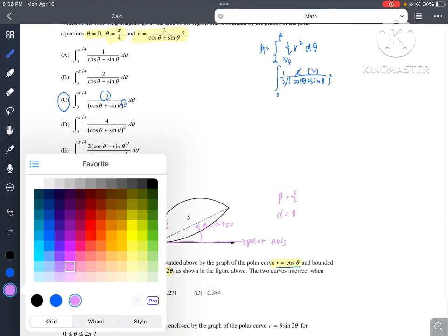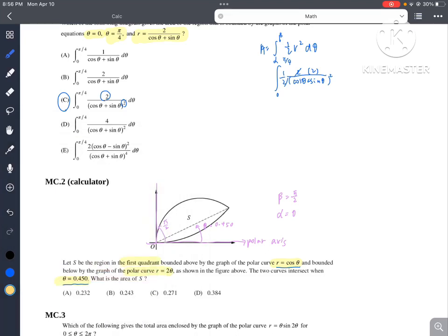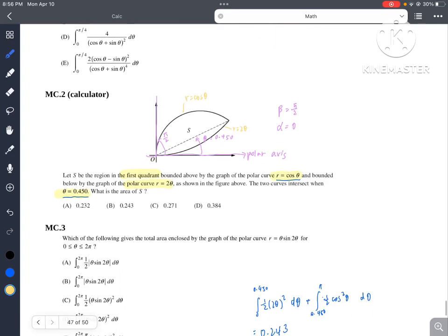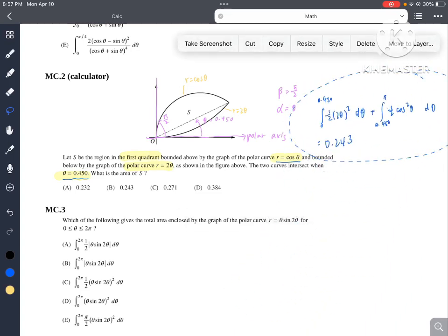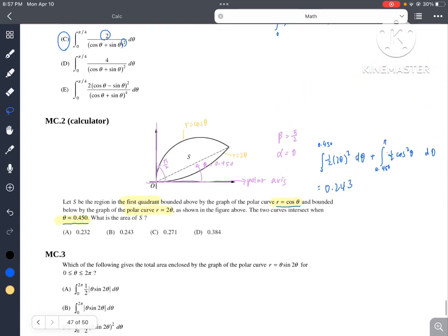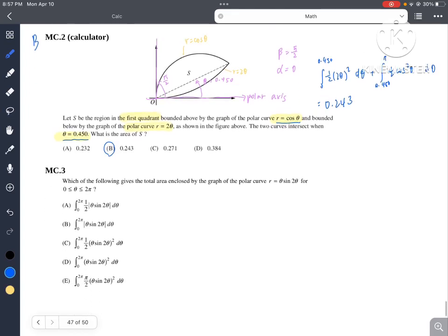We can also try to identify which curve is which one. It says it's bounded below by the graph r is equal to 2 theta. So this is r is equal to 2 theta, and above by r is equal to cosine theta. So let's just take the integral of this. We can express it in the error as an area, and then we find out the answer will be equal to b after plugging this into our graphing calculator.